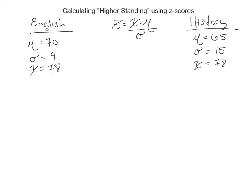So over here on this side, we're going to be looking at English first. In the English class, the average score was 70, so the mu was 70, with a standard deviation of 4. Your score was 78.